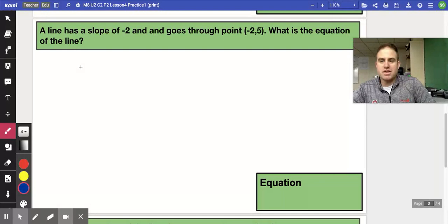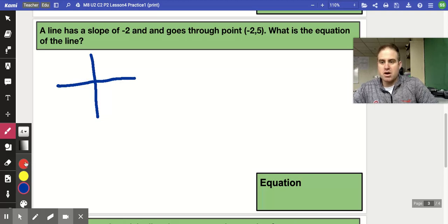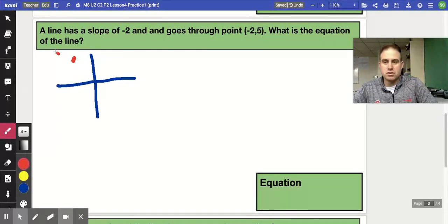So just to think visually here about what's happening, if I were to go ahead and draw my coordinate grid here and estimate the location of negative 2, 5, and then draw on a line that is decreasing with a slope of negative 2, I will have a line that looks something like this.